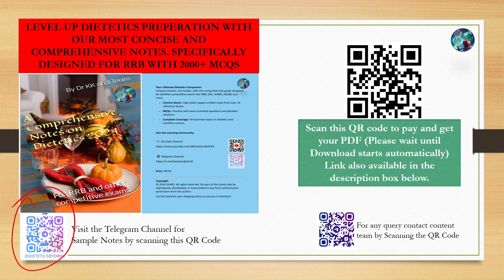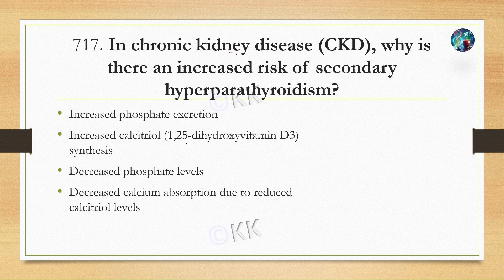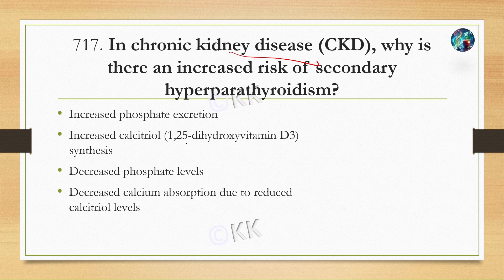Next question: in chronic kidney disease, why is there an increased risk of secondary hyperparathyroidism? Option A: increased phosphate excretion. Option B: increased calcitriol synthesis. Option C: decreased phosphate levels. Option D: decreased calcium absorption due to reduced calcitriol level. The correct answer is Option D: decreased calcium absorption due to reduced calcitriol level.